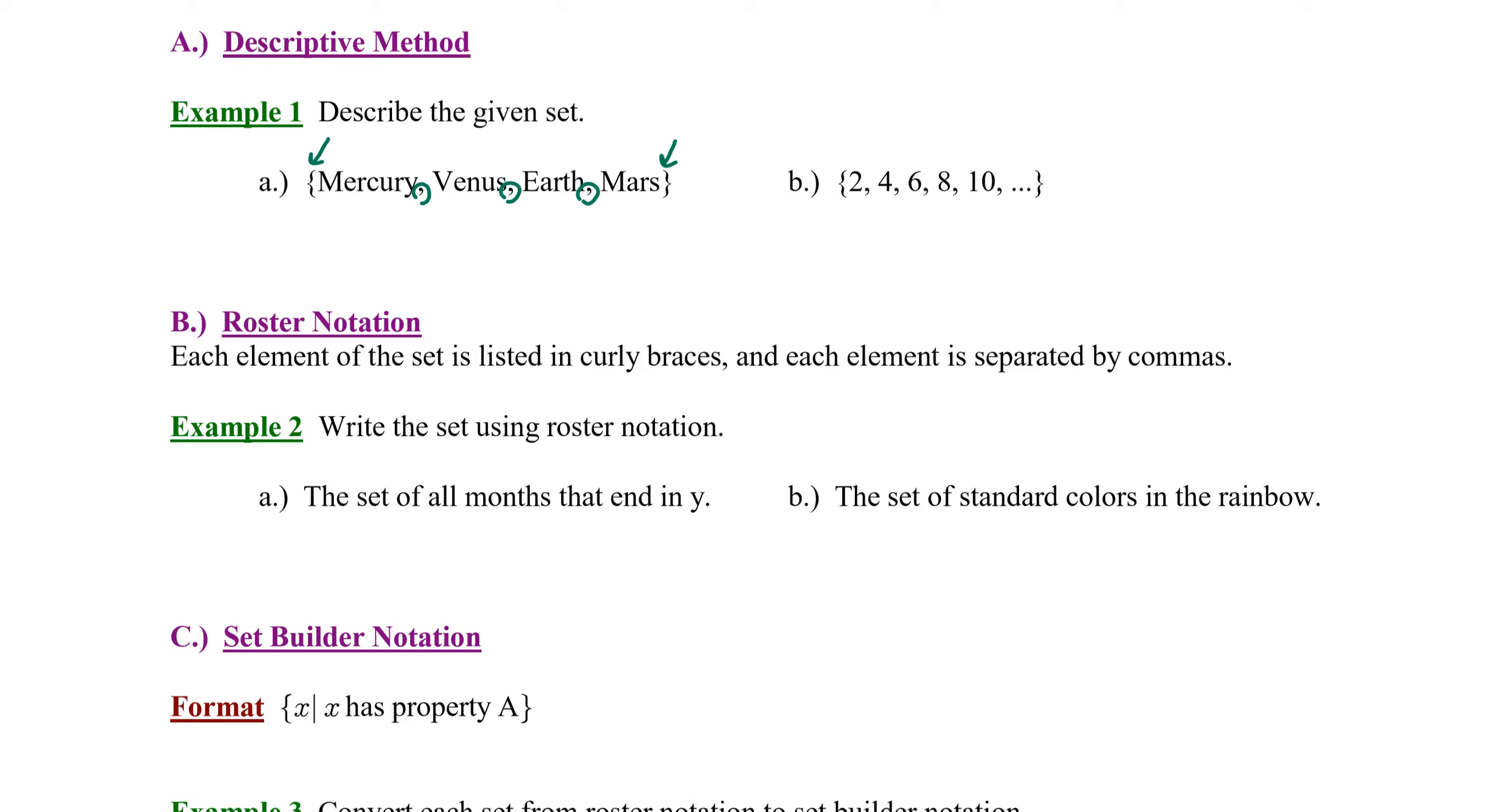Now, we're just going to describe this set. You'll recognize those as the names of planets. But if I say this is the set of planets, I have not been specific enough because we know that Jupiter is a planet and Jupiter is not listed in that set. So, to be specific, we could say this is the set of all inner planets or this is the set of rocky planets. I'm just going to describe it as the set of inner planets in the solar system. So, we're looking at the members and determining their common characteristic and including that in the description of the set.